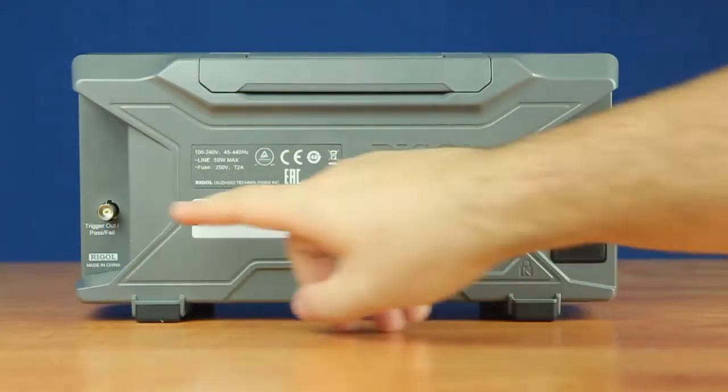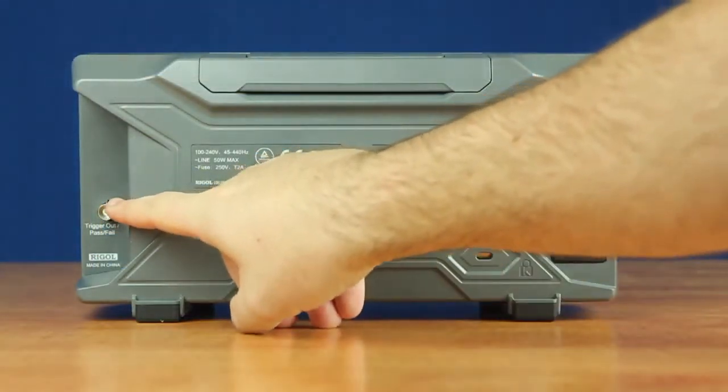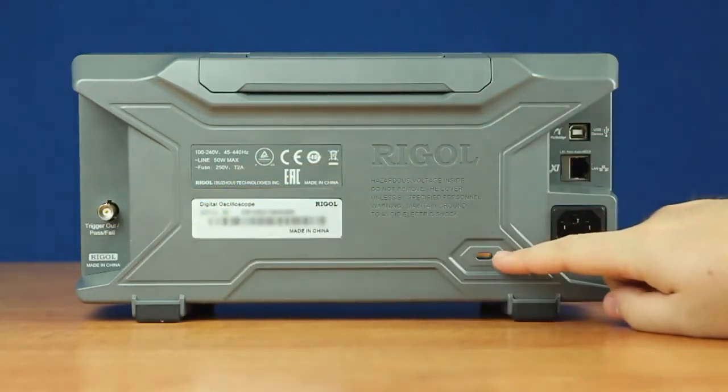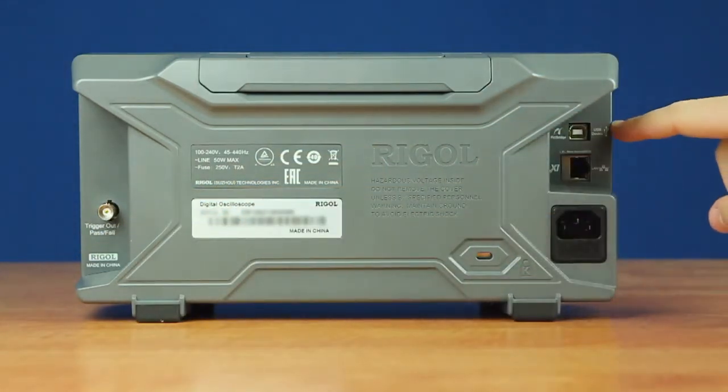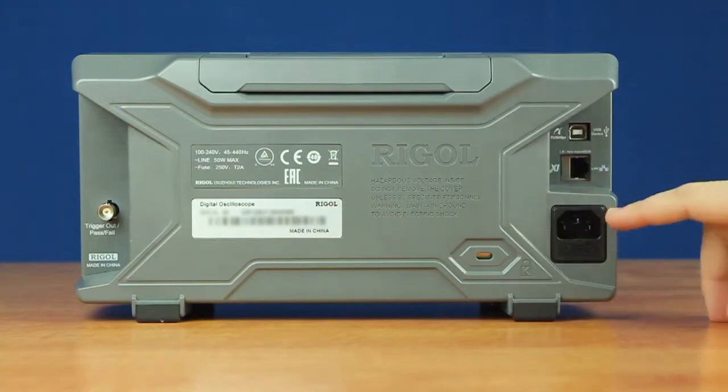On the back panel of the instrument we have our trigger out and pass fail out, then we have our computer lock, followed by a USB port and LXI port, and then finally our power port.